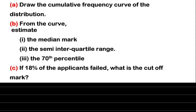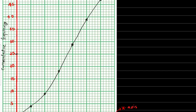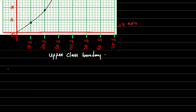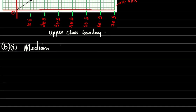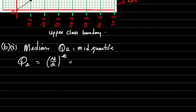Part B asks us to use our curve to estimate the median mark. The median is Q2, also known as the mid-quartile. To find Q2, we calculate the position as n divided by 2. With a total frequency of 50, this gives us the 25th position. Note that 25 is not the median itself, but the position at which we can find the median on the graph.